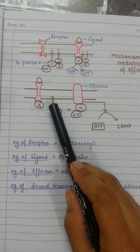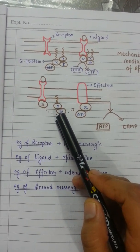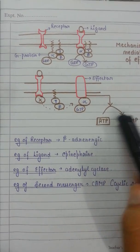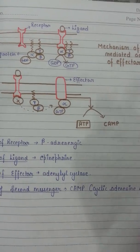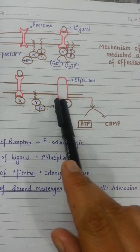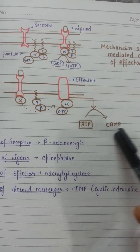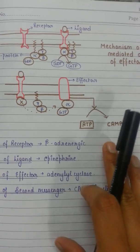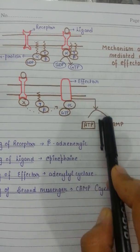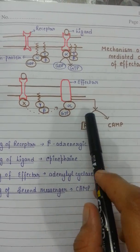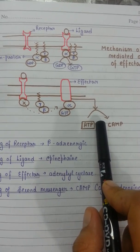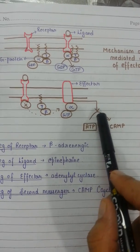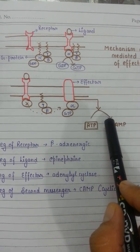This means the alpha subunit then leaves the effector and reattaches to the beta-gamma complex, leading to inactivation of the effector and ultimately stopping cAMP production. There are also certain other factors working to stop this signaling so that the response does not continue indefinitely.